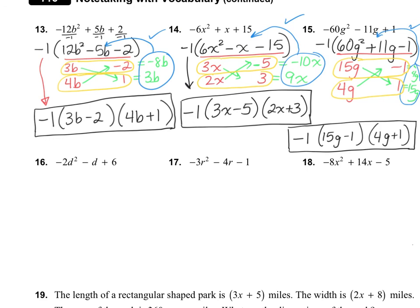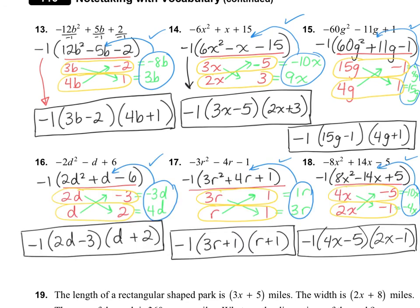Please pause the video and try the next three puzzles: numbers 16, 17, and 18. Don't forget to pull out the negatives first on all three, then finish factoring. Check your answers and see if you can find any mistakes. For the sake of this video, we're going to skip numbers 19 and 20, although we might do them during class. That's it — thanks for watching.